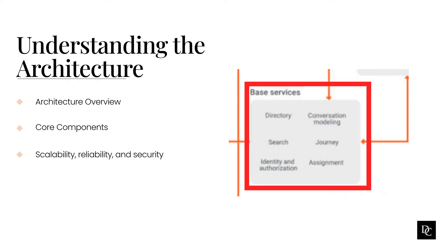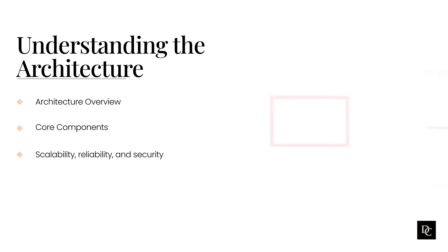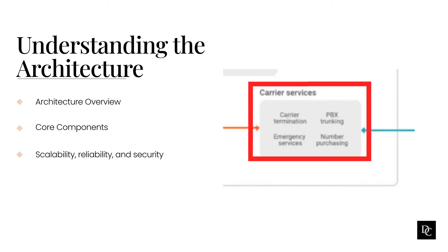Core services power the building blocks of every Genesis Cloud organization. They manage account configuration, directory search, user membership, phone call routing, agent assignment, and more. Contact between individuals and groups are handled by the communication services, which are responsible for managing phone calls, chats, voicemail, and faxing.